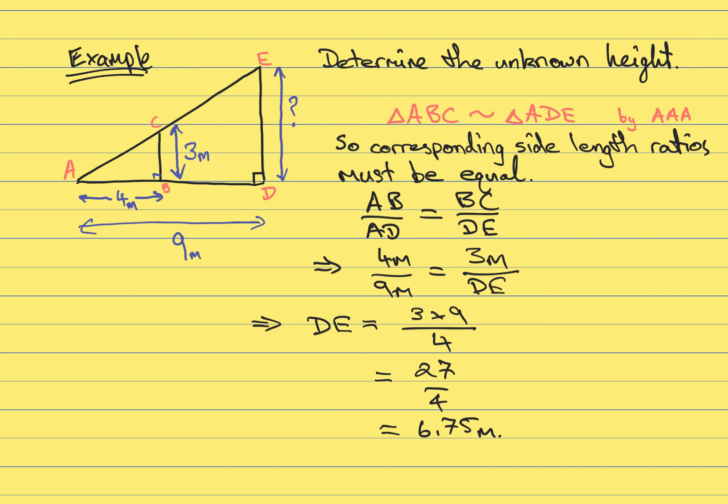But how does this relate to scale factor? Well, if we look closely, the scale factor is hidden right here. The scale factor is that ratio of those side lengths, 4 over 9. Now we can see that we also have the scale factor 3 over DE, or 3 over 6.75. That linear scale factor is the same in each case here, because we're talking about similar triangles.